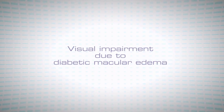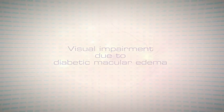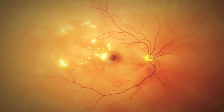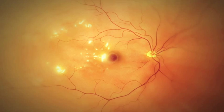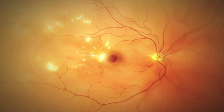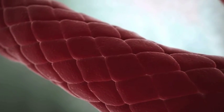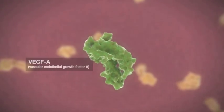Diabetic macular edema, or DME, occurs as a result of increased vascular permeability, which promotes the accumulation of fluid and protein deposits in the macular region of the retina. This causes retinal swelling and damage leading to visual impairment.